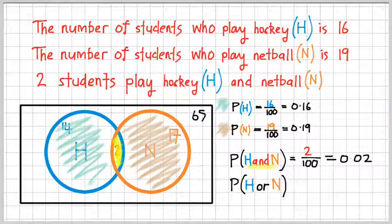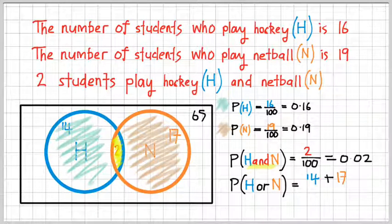So essentially what I'm going to do is take out of the picture that bit in the middle, that overlap, those students who play both sports. So I've already done that in my numbers there on the diagram, so 14 plus 17 is the number of students who play just hockey and just netball. Now that will be divided by...